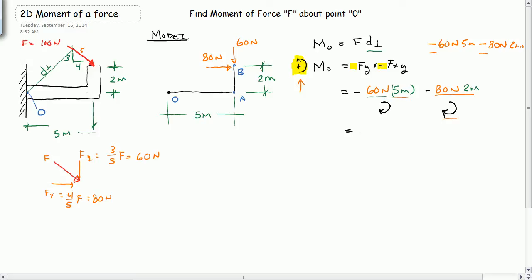So when I do the math, I get minus 300 newtons, minus 160 newtons, and the answer is equal to minus 460 newtons. The significance of the sign, again, is relative to the sign convention. What might be clearer is to state your answer as the moment about point O is equal to 460 newtons in that direction.